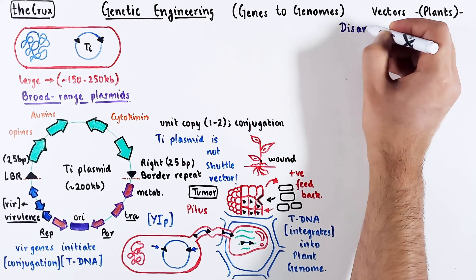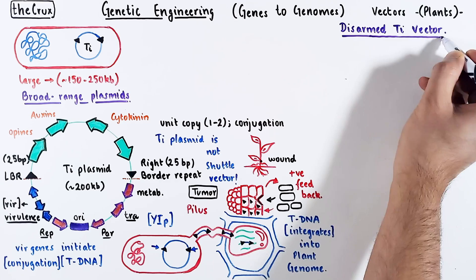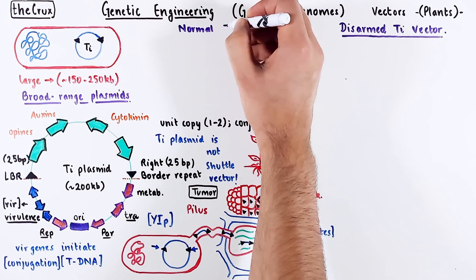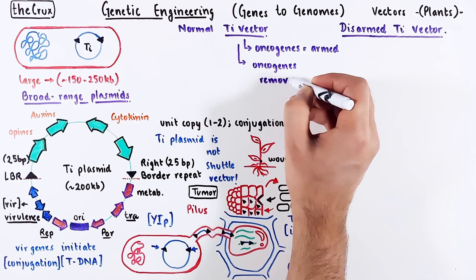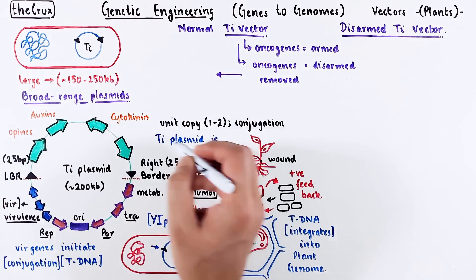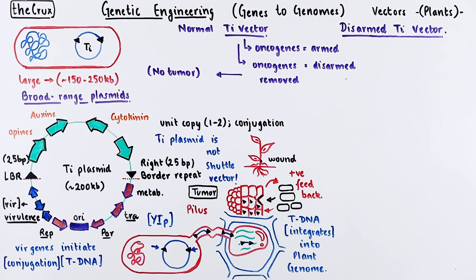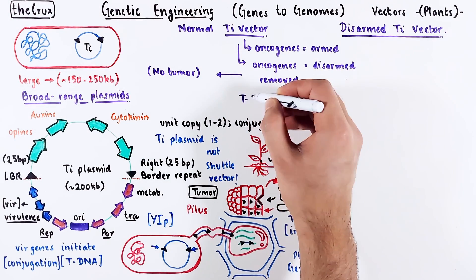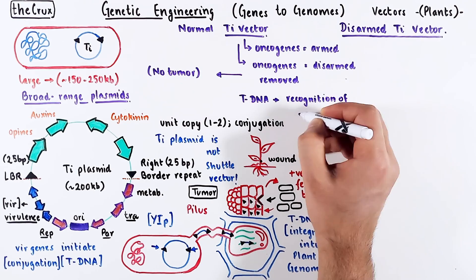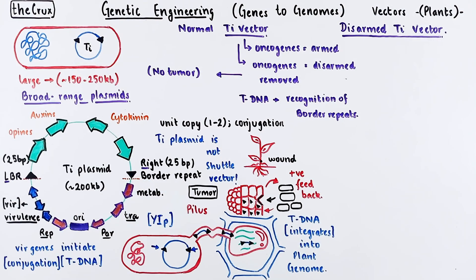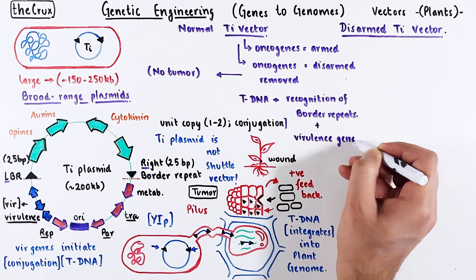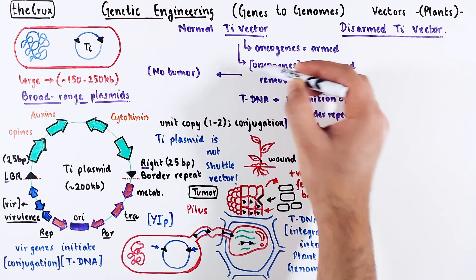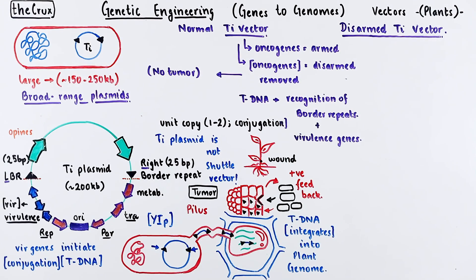Understanding how plants like Noodle get infected led to the development of disarmed Ti vectors. A normal Ti plasmid contains oncogenes — this is considered armed. But if you take away the oncogenes from the plasmid, you have disarmed the plasmid. The removal of auxin and cytokinin means tumors cannot be formed even after bacterial infection. Transfer of T-DNA depends on the recognition of the border repeats, not on what is inside the T-DNA. The transfer itself occurs through the virulence genes, which are not part of tumor propagation. So removing auxin and cytokinin still keeps the Ti plasmid functional, and you can add any DNA instead.